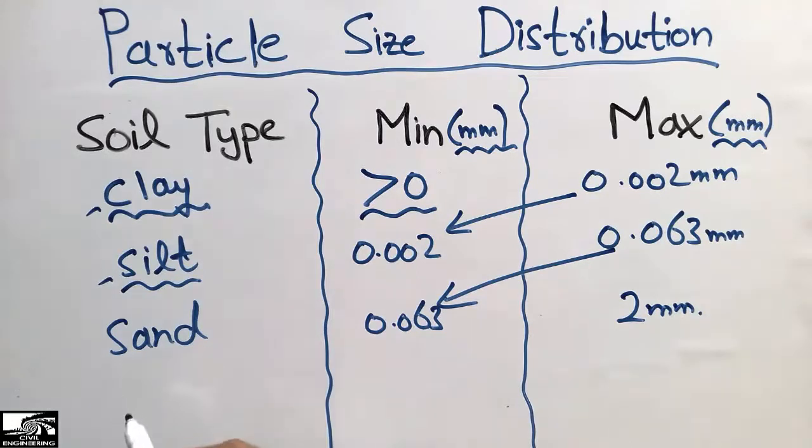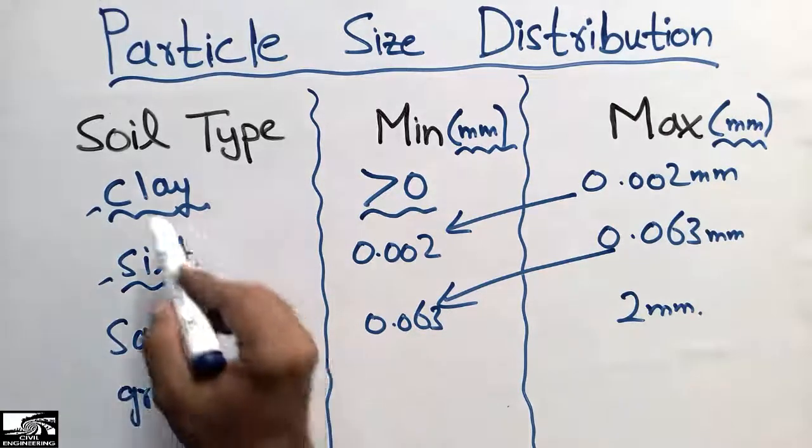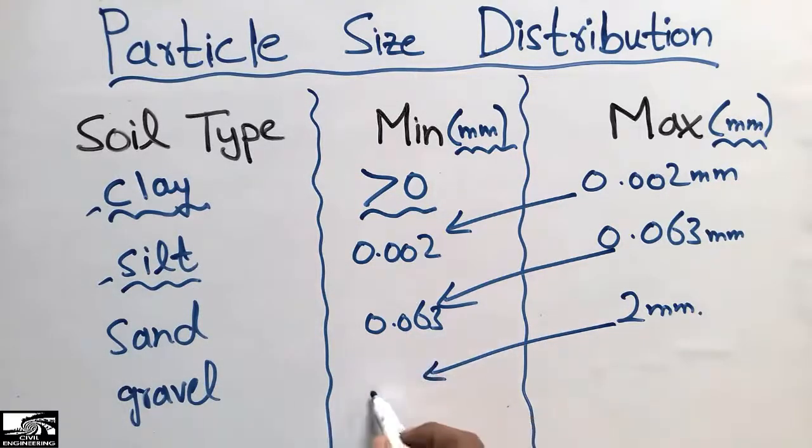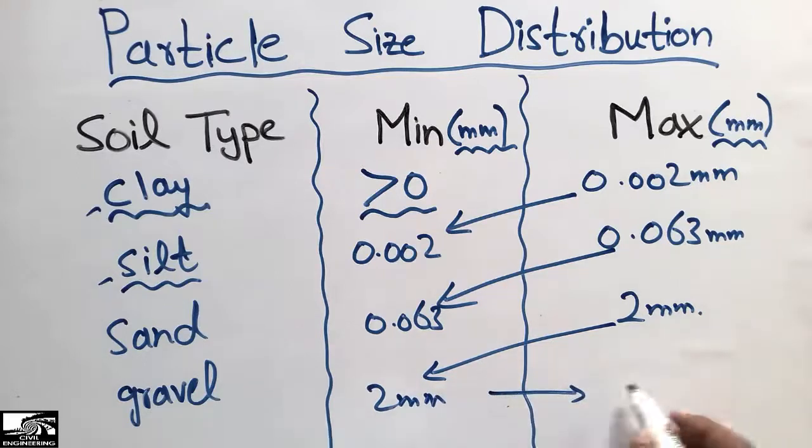The fourth type of soil is gravel, which has greater particle size than all the rest: clay, silt, and sand. The minimum size of gravel is 2 millimeters, while the maximum particle size in the case of gravel is 63 millimeters.